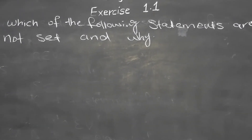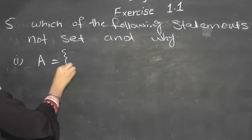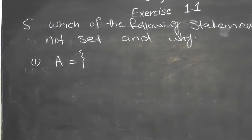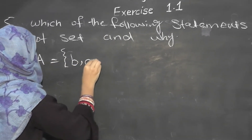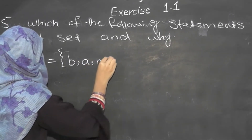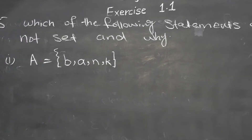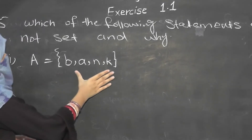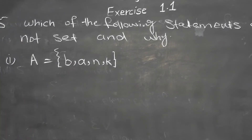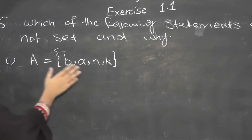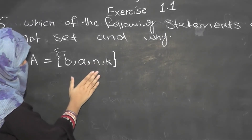First, part (a): A = {B, A, N, K}. We check if it is a set using curly brackets. First, we check if it is distinct, then we check if it is well-defined.